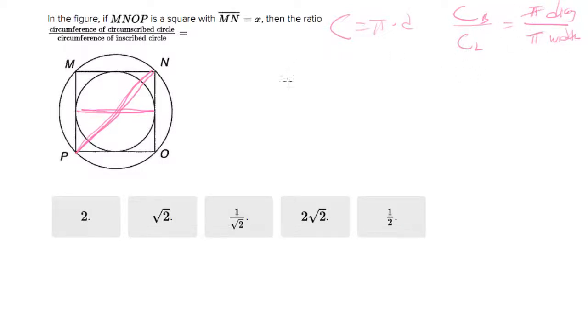The pi's cancel out, so we're really being asked, this whole question rephrases to: what's the ratio of the diagonal over the width of the square?